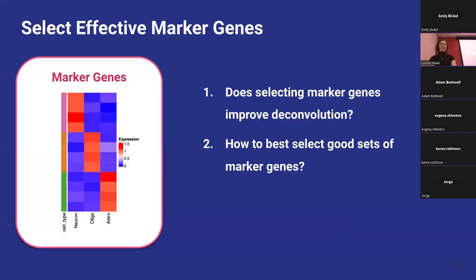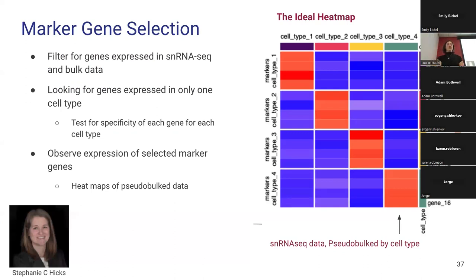Moving on to marker gene selection. The questions we wanted to ask: does selecting marker genes versus using all genes in a dataset improve deconvolution? And if so, how can we select good sets of marker genes? Our thinking around marker gene selection was motivated by Stephanie Hicks — if we can select genes with nice clean differences between cell types, it'll really help with deconvolution. We'd filter for genes expressed in both datasets, then look for genes expressed in only one cell type — so on a heatmap, you'd see a nice red diagonal of cell-type-specific expression.